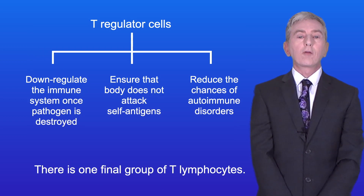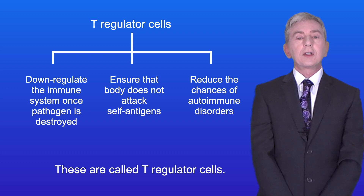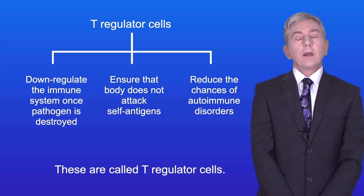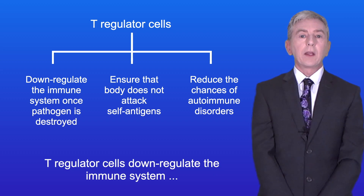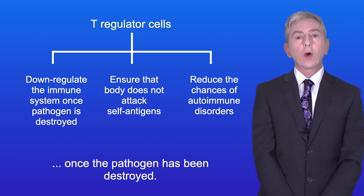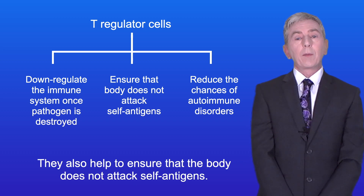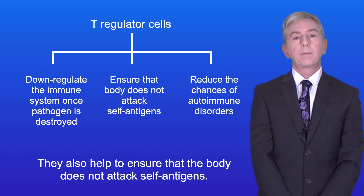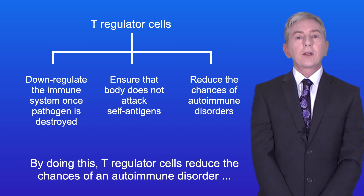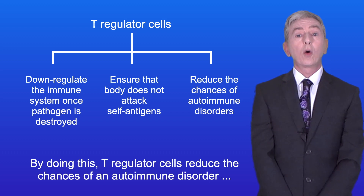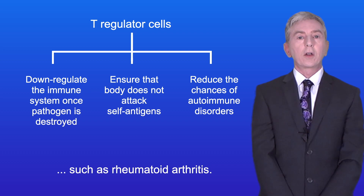There is one final group of T lymphocytes: T regulator cells. T regulator cells down-regulate the immune system once the pathogen has been destroyed. They also help to ensure that the body does not attack self-antigens. By doing this, T regulator cells reduce the chances of an autoimmune disorder, such as rheumatoid arthritis.